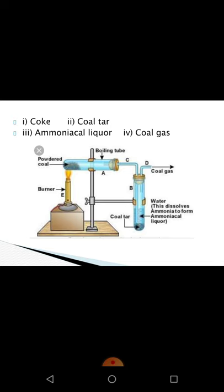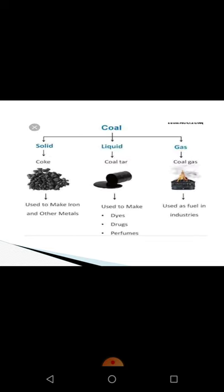Let's discuss the by-products one by one. Destructive distillation gives solid, liquid and gaseous products. The solid by-product is coke, used to make iron and other metals. The liquid by-product is coal tar, used to make dyes, drugs and perfumes. The gaseous by-product is coal gas, used as a fuel in industries.